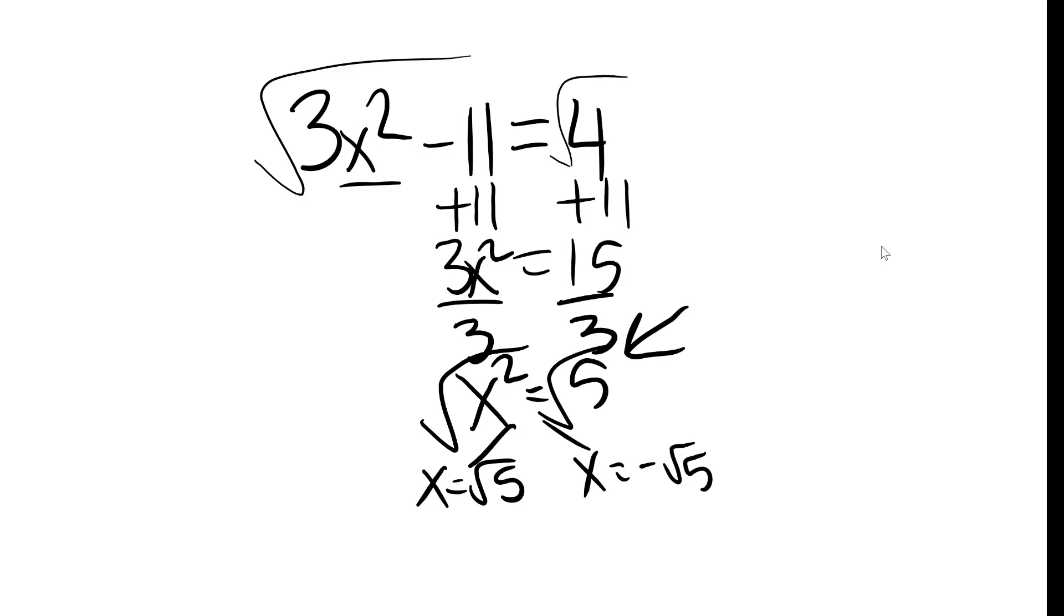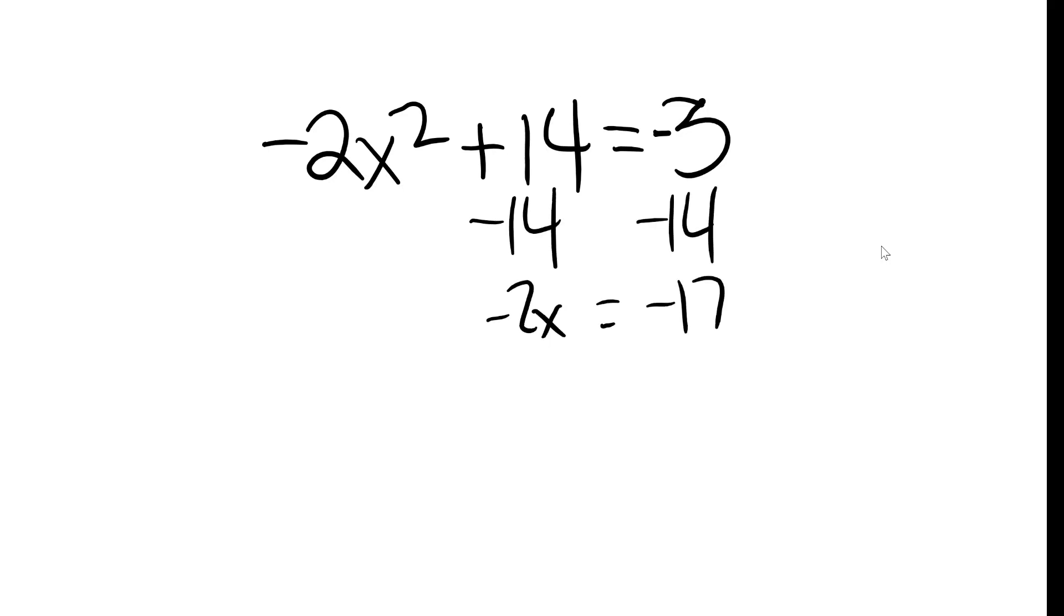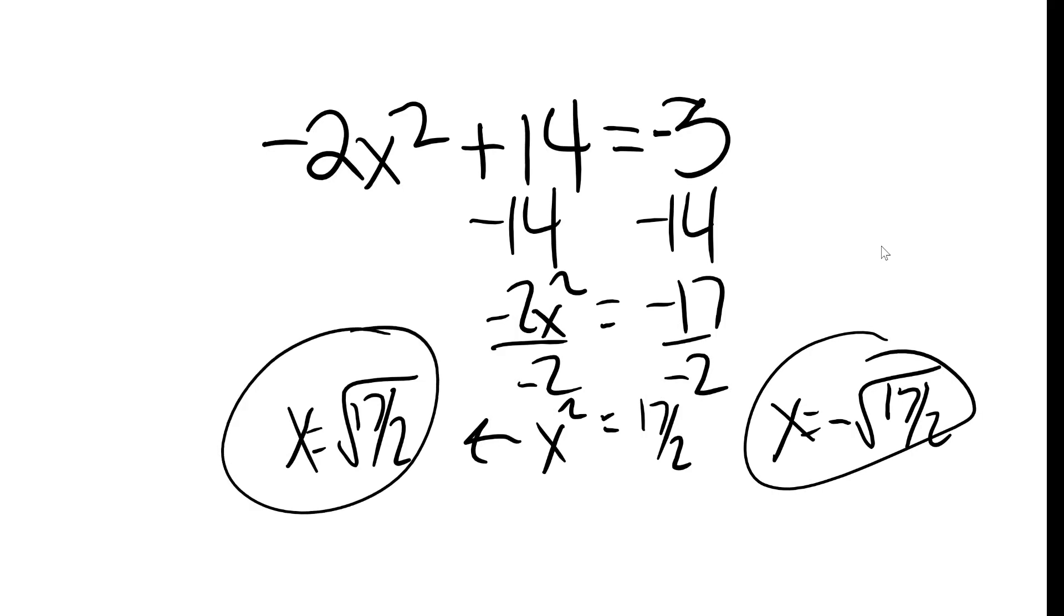All right, our next type of question is going to be this kind. What if I have something like negative 2x squared plus 14 equals negative 3, like this? Is this question going to be evil? Not really. We subtract 14, we divide by negative 2, and we actually get x squared equals 17 over 2, or 8.5 would also be fine. When I go to square root both sides, we get the two answers. We get x equals the square root of 17 over 2, and x equals the negative square root of 17 over 2. So the negatives there really didn't throw us much for a loop.